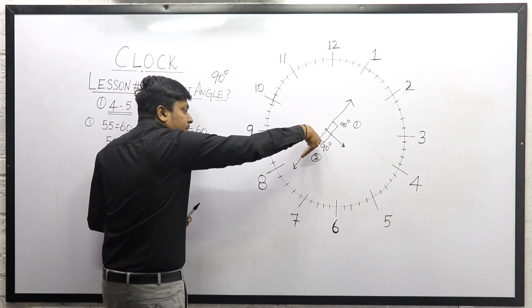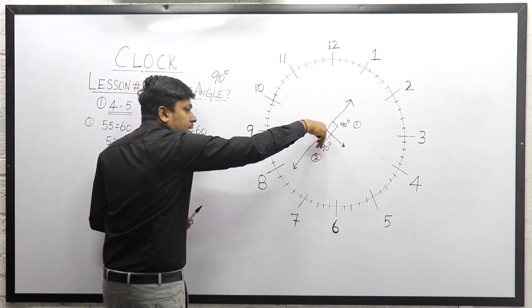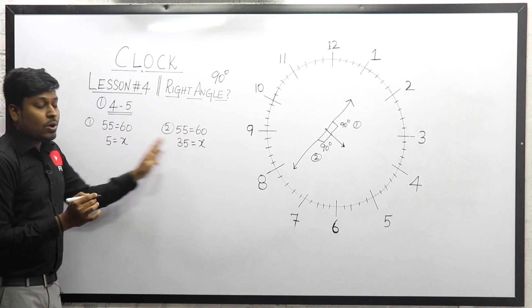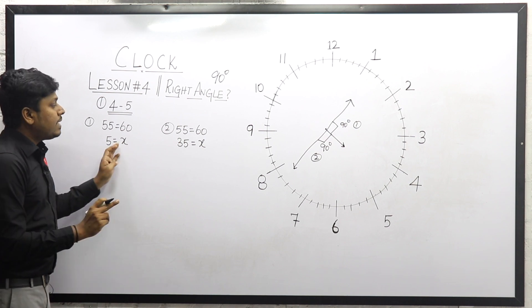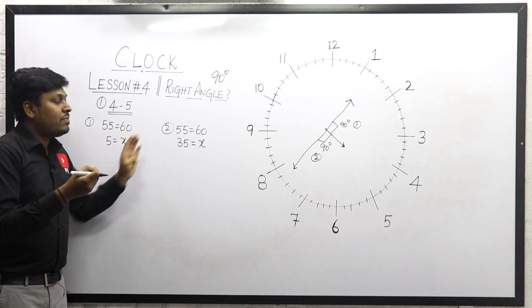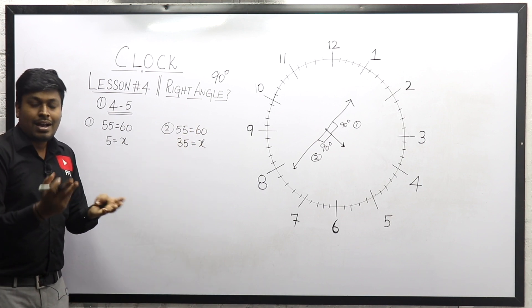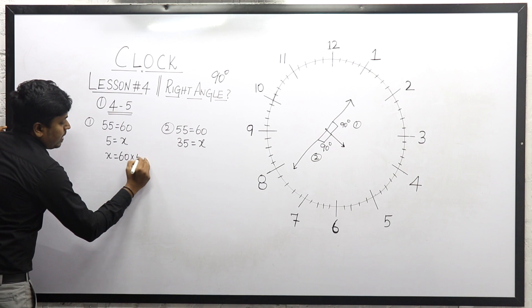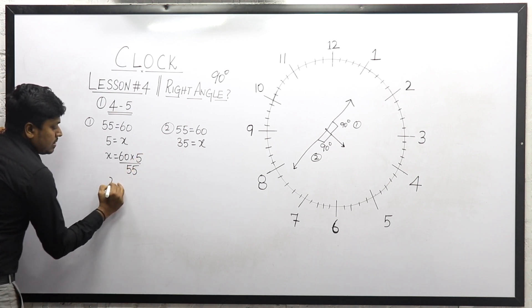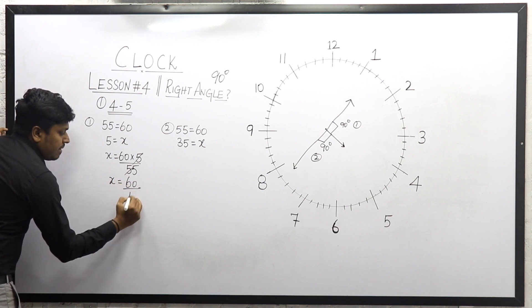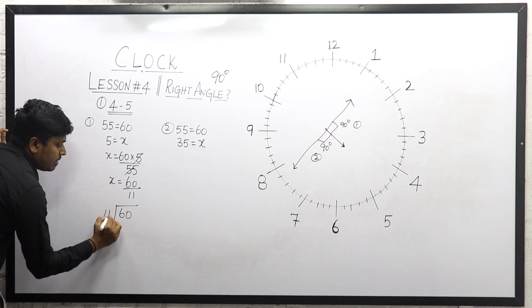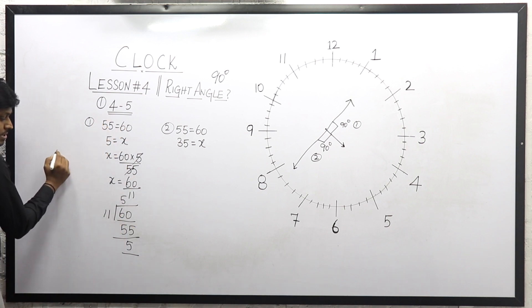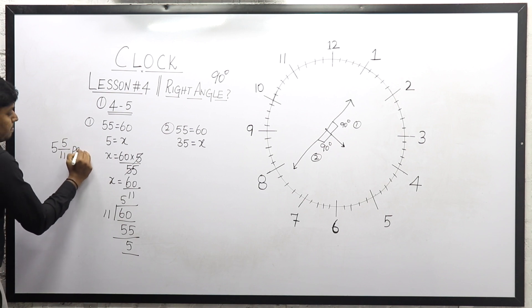After 35 minutes, the hour hand and minute hand will be at 90 degrees. So put 35 equals X. Solving the first possible: X equals 60 × 5 divided by 55. Cancelling on the 5 table gives 60 divided by 11. Dividing 60 by 11: 5 times 55, remainder 5. So the answer for the first possible is 5 5/11, past 4.